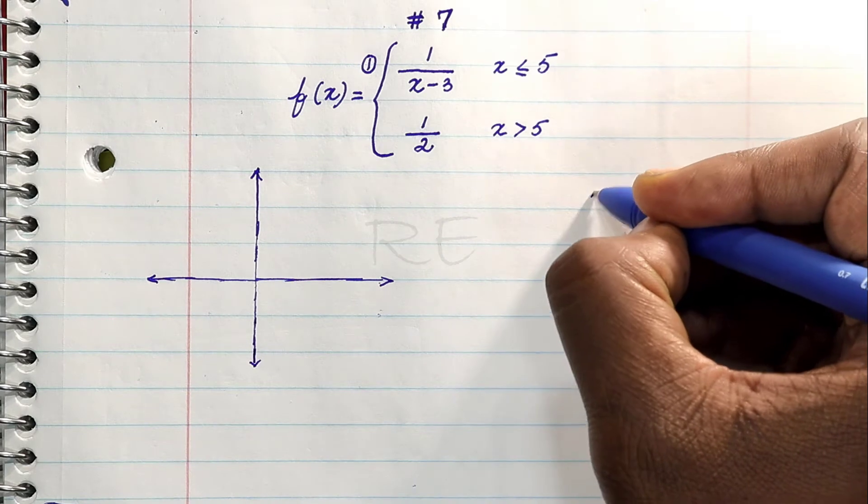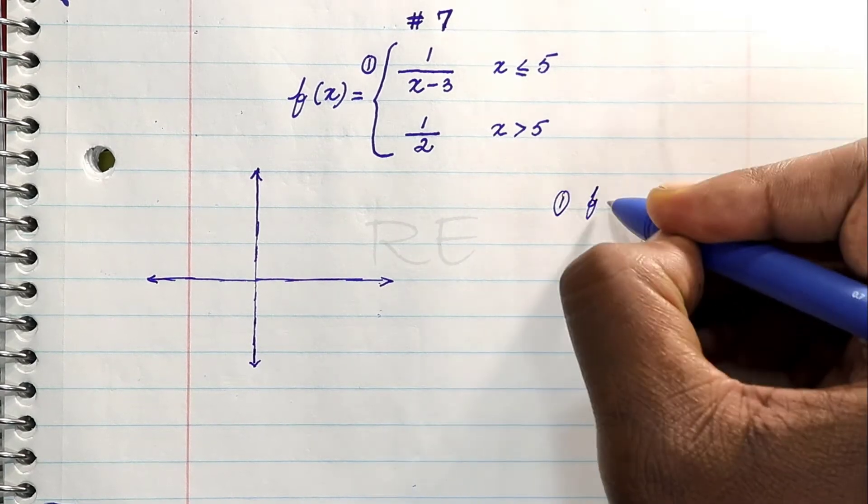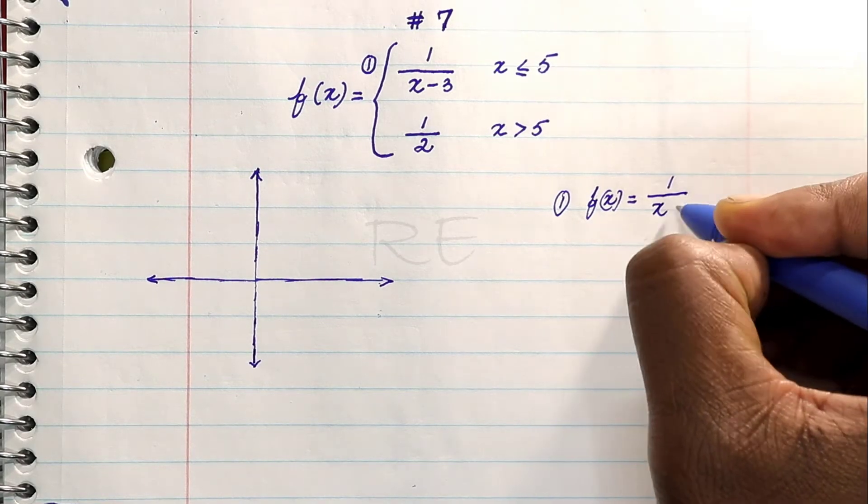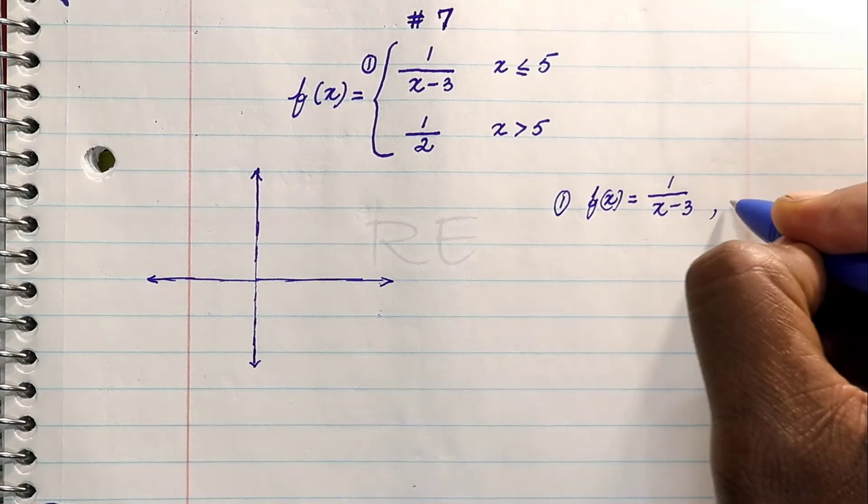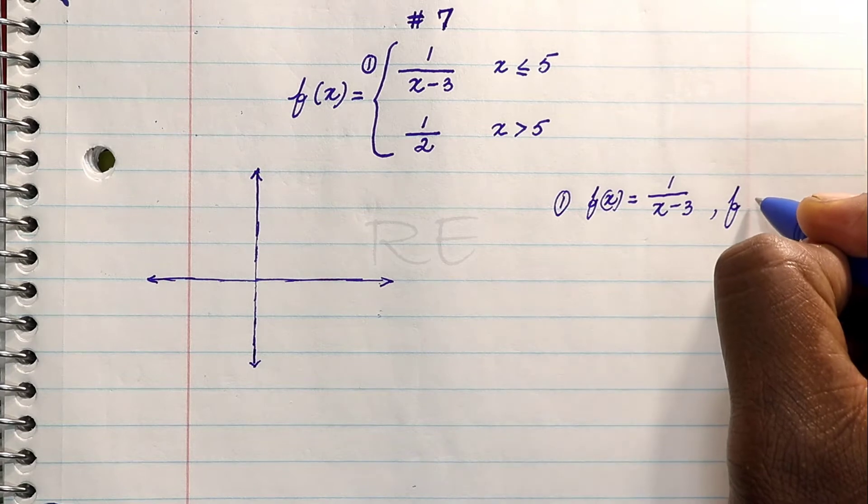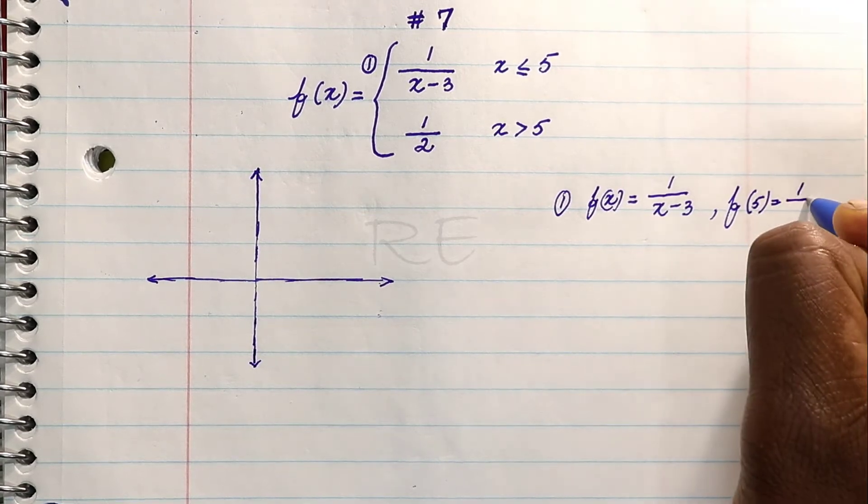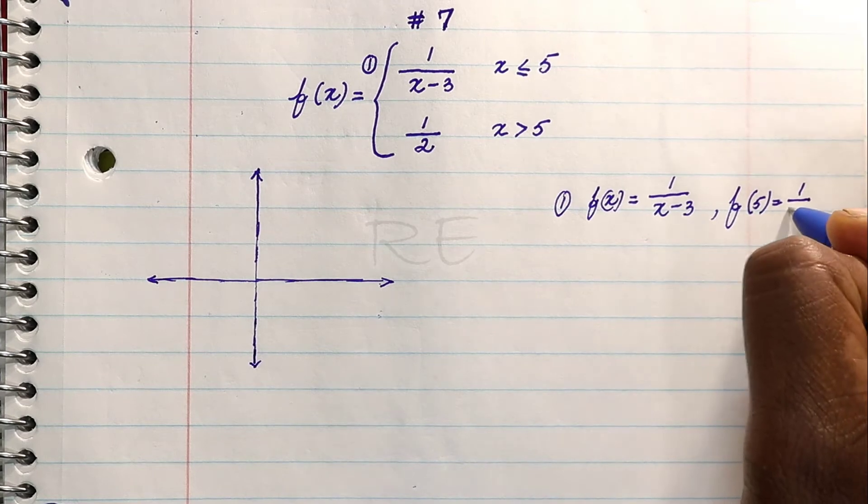First, we are going to sketch the first function, the left function. f(x) equals 1 over x minus 3 if x is less than or equal to 5.